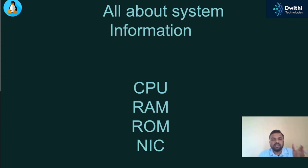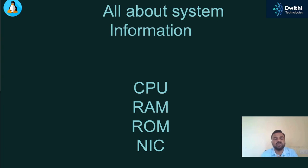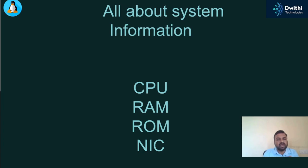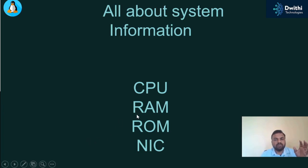RAM is nothing but temporary storage. For example, in your mobiles or laptops, if you have 4 GB internal and 16 GB external — 4 GB is nothing but RAM and 16 GB is your hard disk space. So RAM is temporary storage. Whenever you try to perform any of your tasks, things first get loaded into RAM, and RAM will distribute all of these tasks to your CPU.